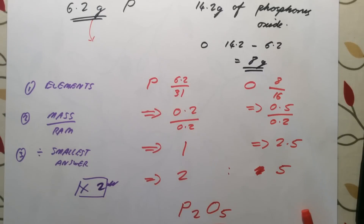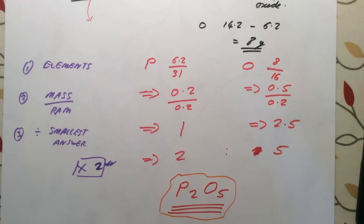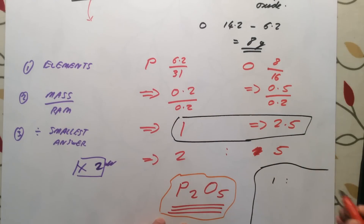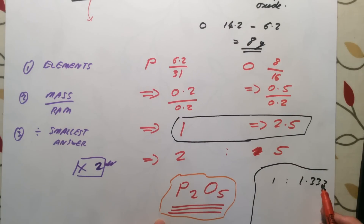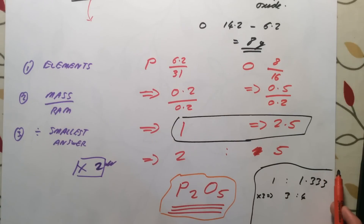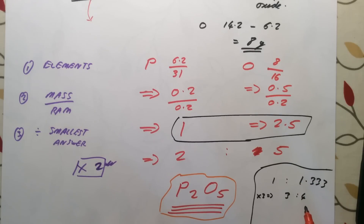It's really important that if you get an answer that isn't a whole number ratio, you work out a way to turn it into one. For example, if you were to get a ratio like 1 to 1.333, you'd use logic to recognise that multiplying both by 3 gives a whole number ratio of 3 to 4. Just be aware that if the number doesn't obviously round, you'll need to find something to multiply by to give a whole number ratio.